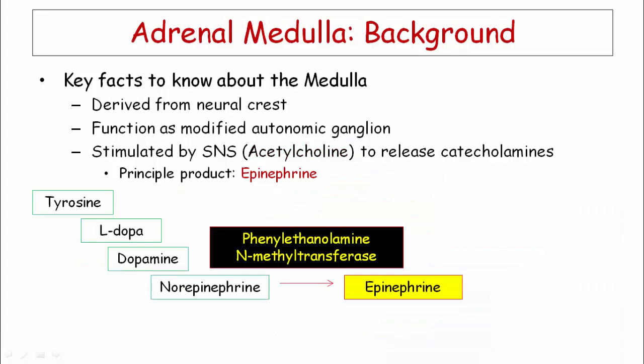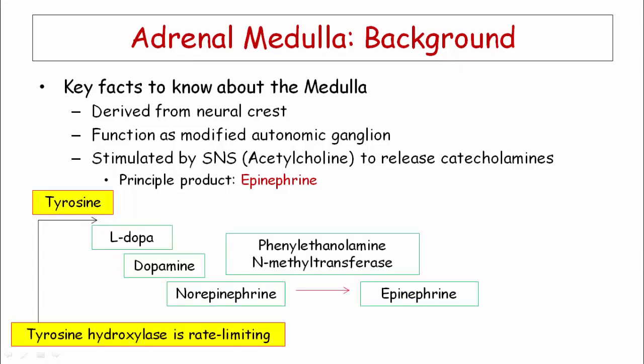Epinephrine is the principal product of the medulla, and the medulla synthesizes the majority of epinephrine in our body. The enzyme that converts norepinephrine to epinephrine is phenylethanolamine N-methyltransferase, or PNMT, which is found in high concentrations in the medulla. Although I omitted the hydroxylases and decarboxylase from the synthetic pathway, it is the N-methyltransferase that enjoys the most love at the NBME. The rate-limiting enzyme in catecholamine synthesis is tyrosine hydroxylase.